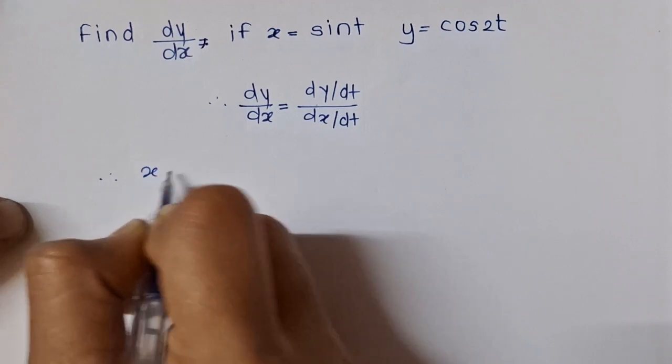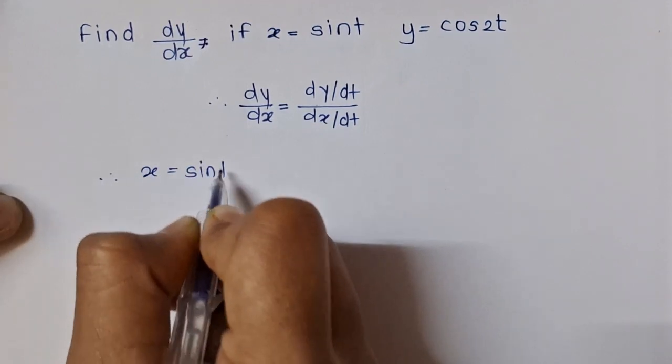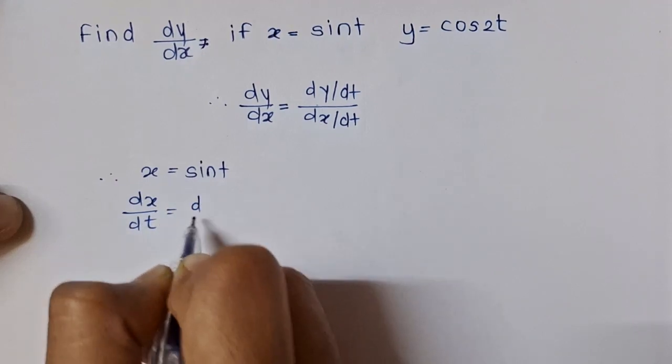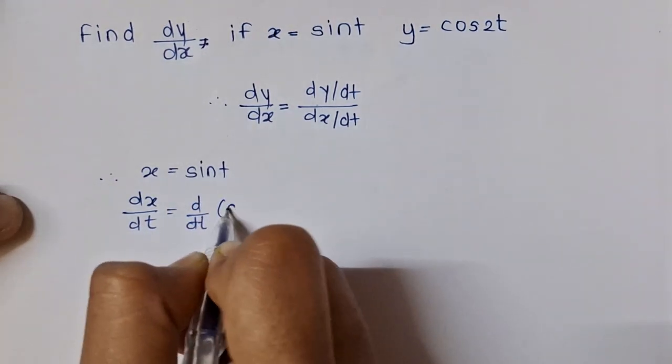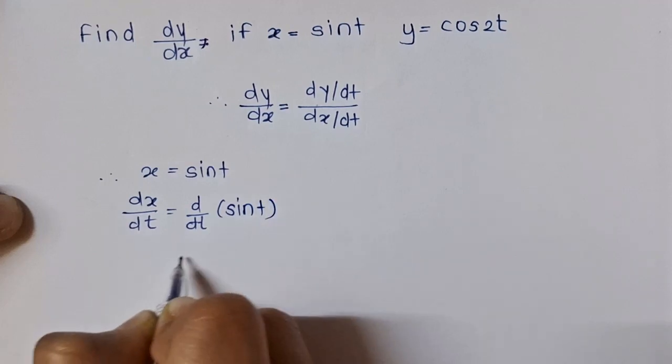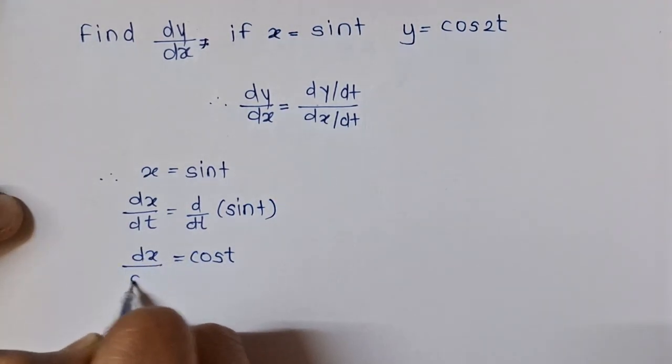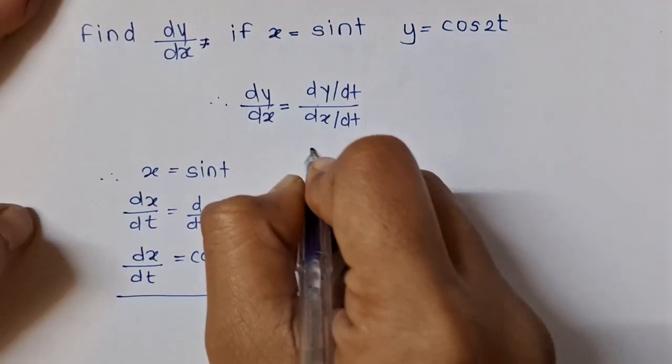Let's get started with x = sin t. dx/dt is equal to d/dt of sin t, which will be equal to cos t. So this will be the value of dx/dt.